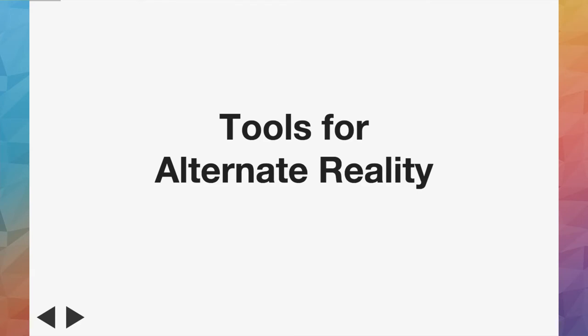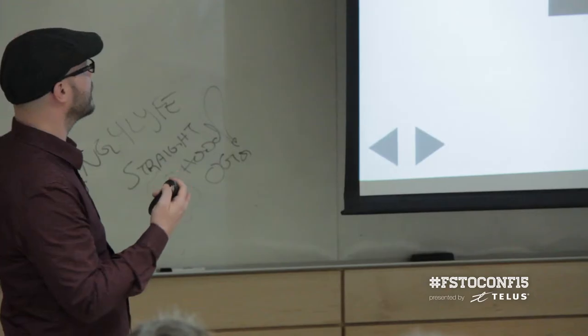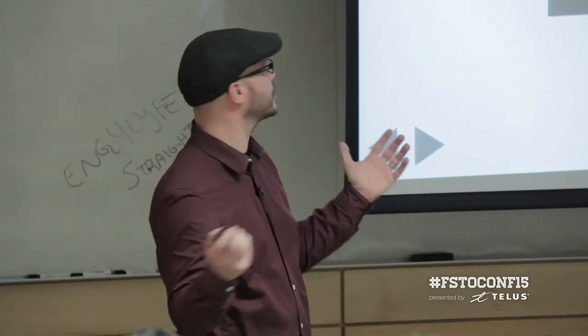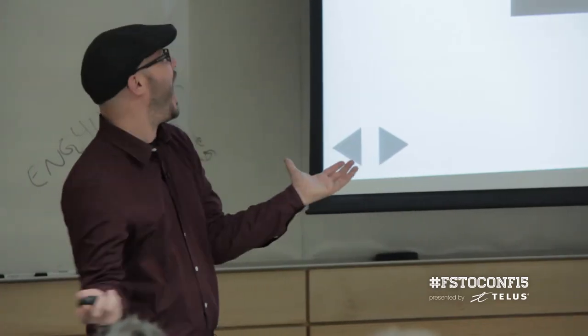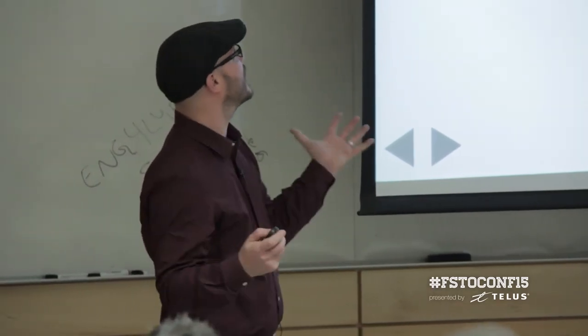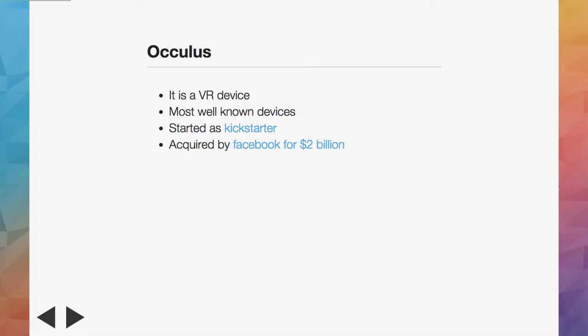First, the tools of the trade - the devices we need. Basically, Oculus Rift. Everybody, when we talk about alternate reality or virtual reality, they think about this guy - wearing glasses, mouth open, the wow effect. An Oculus is a VR device, and it's the most well-known device. It started as a Kickstarter, and now they got acquired about a year ago for $2 billion.